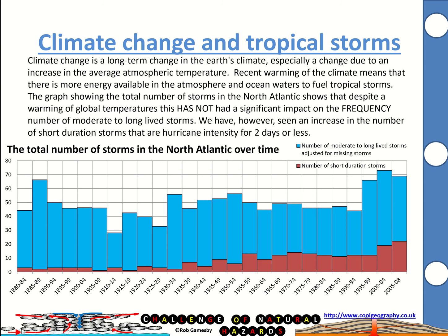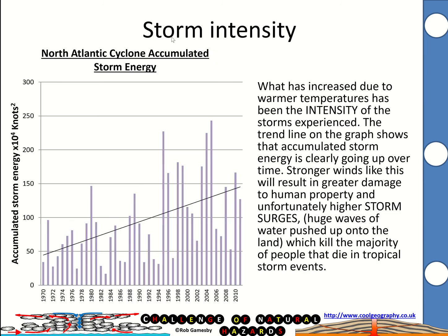The intensity of storms tends to be going up — we're getting bigger storms with stronger winds and higher storm surges. You can see on the graph from 1970 onwards the amount of energy within storms in any given year bounces up and down, but the most energetic storms come towards the back end of the period, giving us an average trend line heading upwards. That means stronger winds, more property damage, and storm surges of higher magnitude with bigger waves. Don't forget storm surges are what kill the majority of people in tropical storm events.